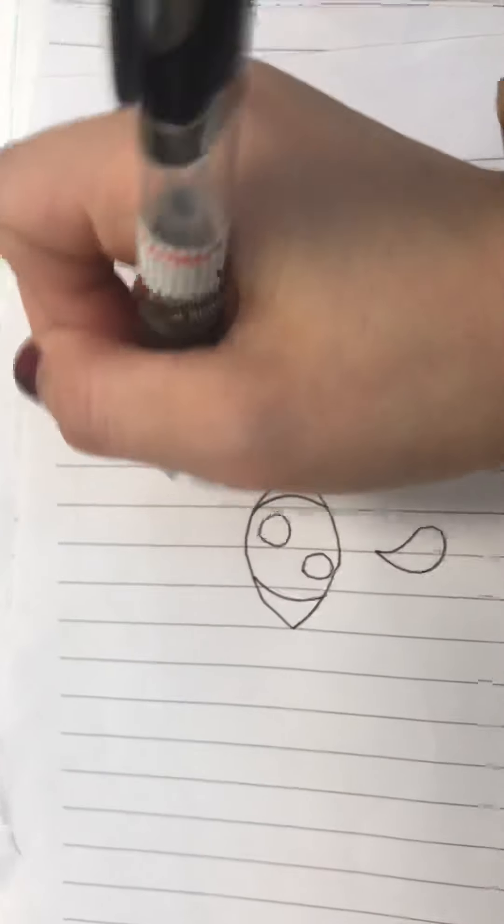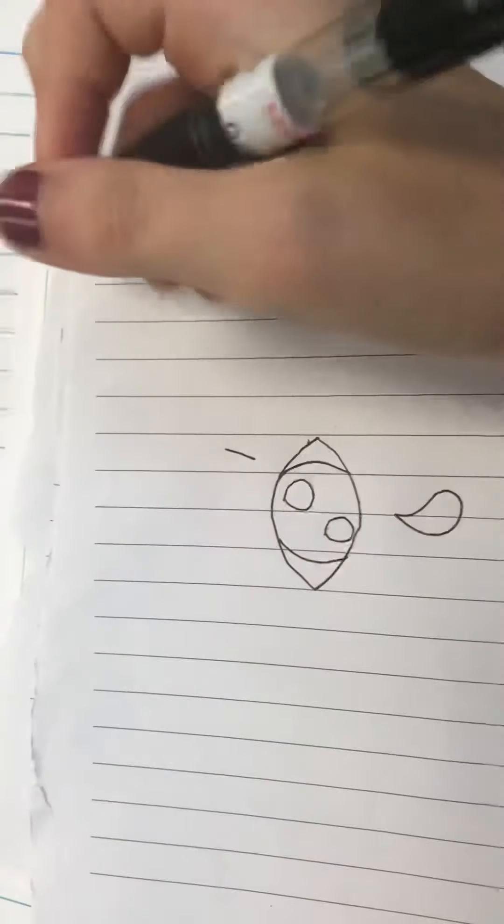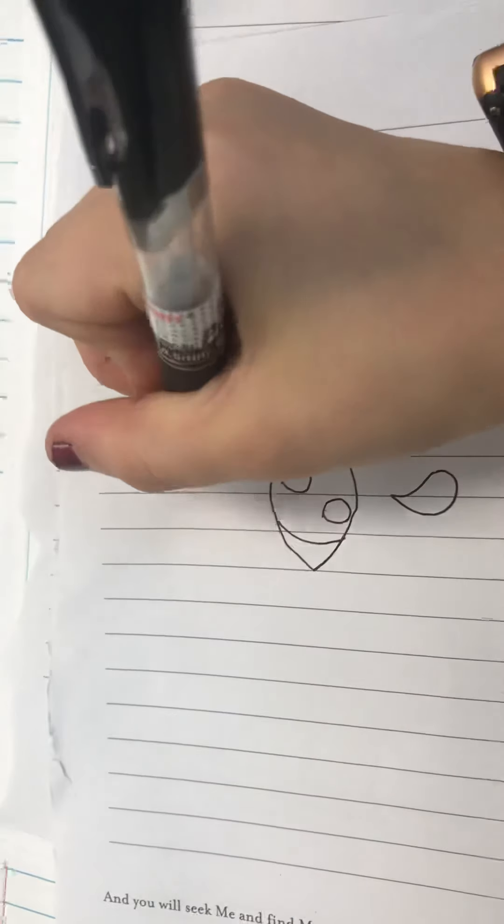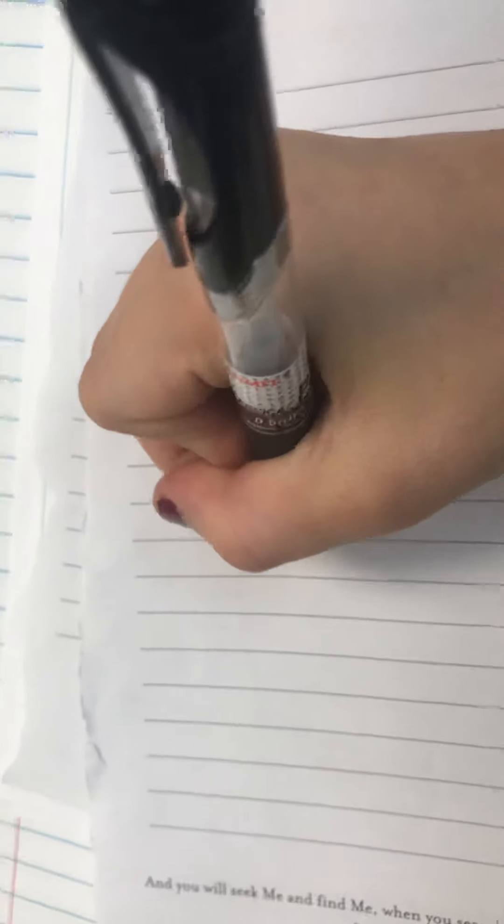Now we're going to do the eyebrow. You just need to put a line right there, then a big one like that, then another line under it. Then for the eyelashes, just put three lines right there.